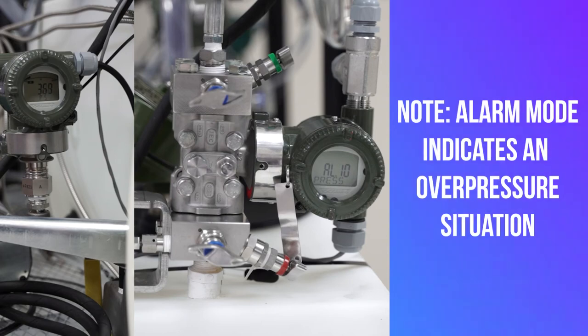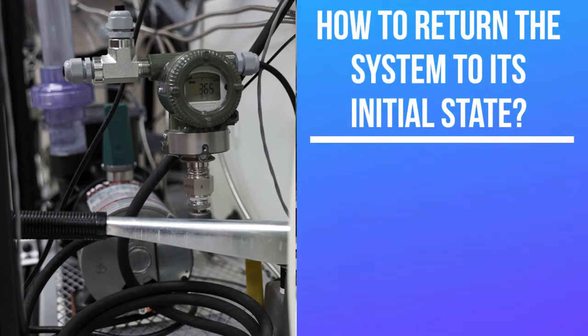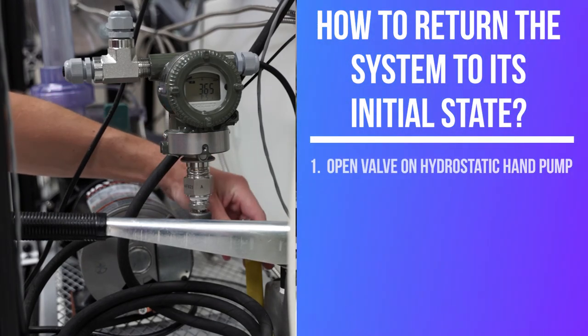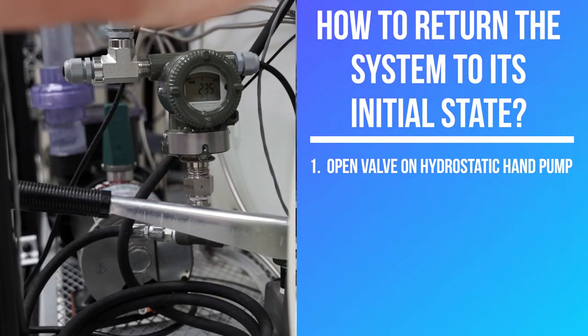The transmitter is alarming, telling you there's something going wrong, we have an overpressure situation. So to put this system back and quit that overpressure incident, I'm going to do the reverse. I'm going to first open this valve on the hydrostatic hand pump.